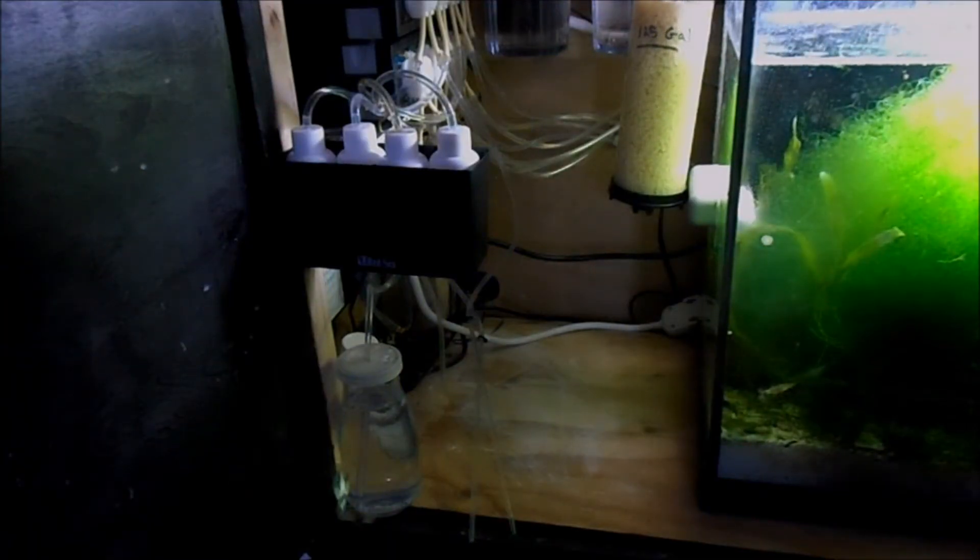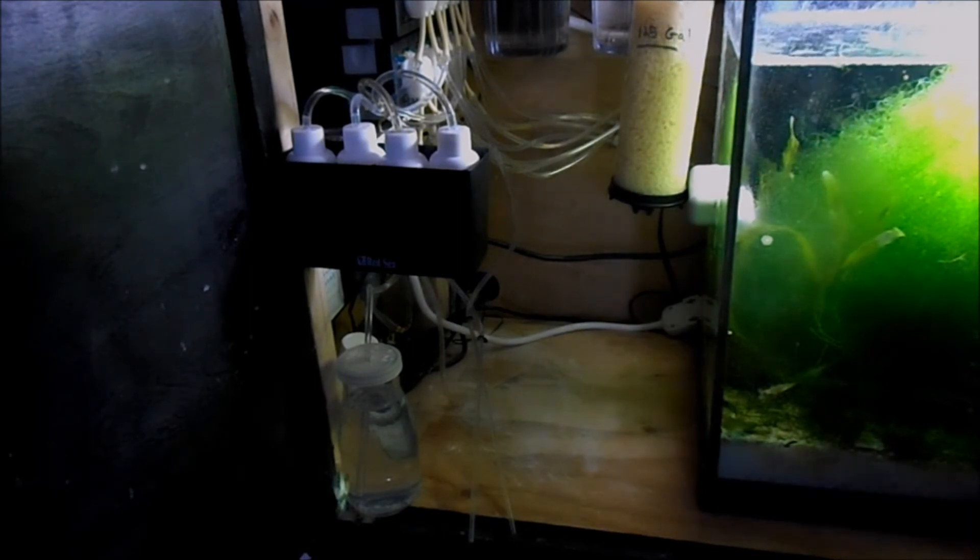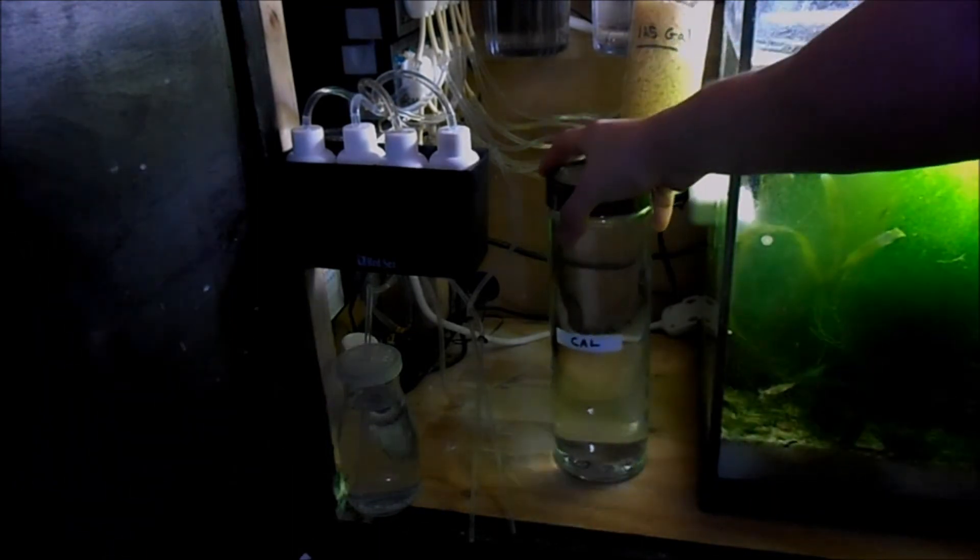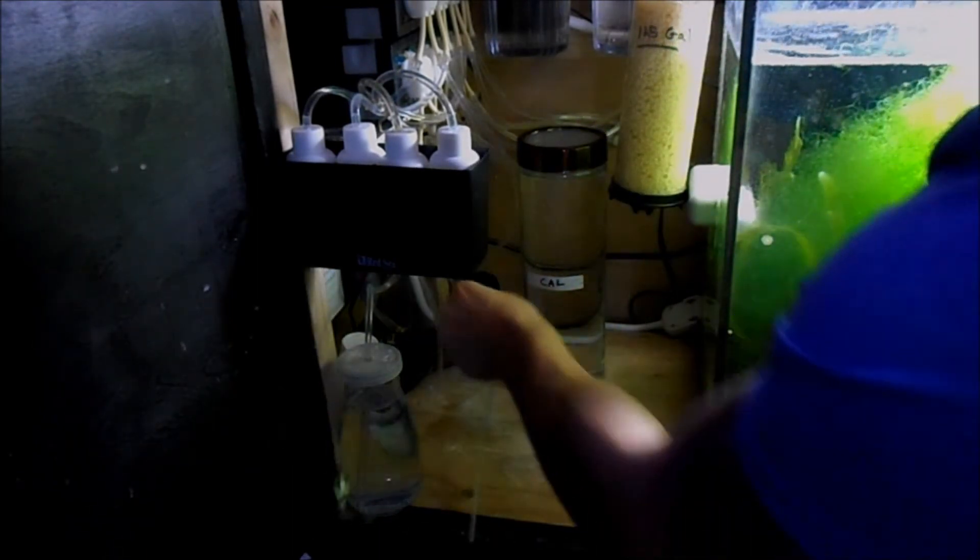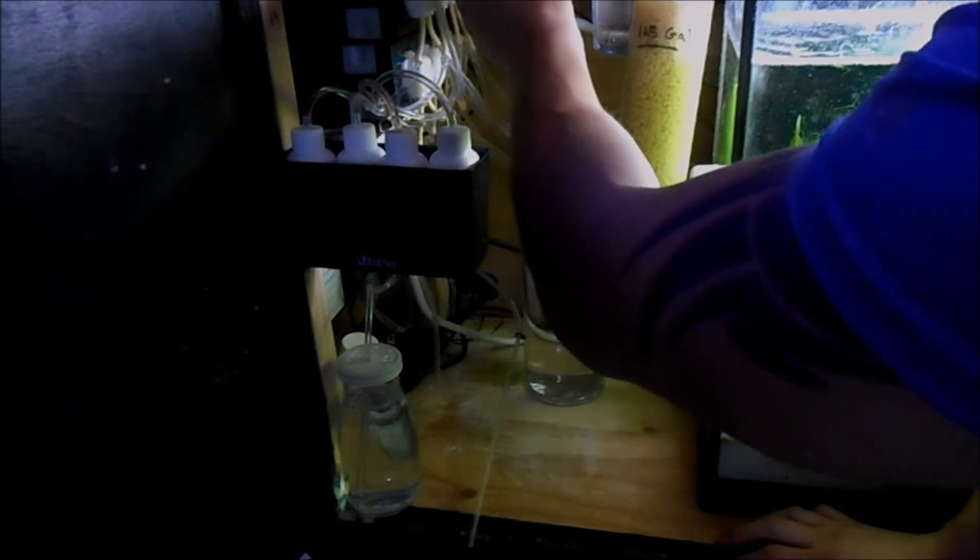All right guys, we're here at the reef tank. Now we're underneath the stand. The dosing pump is now off just to make sure we're not pulling any liquid out of the tube while we're messing with the containers. So let's go ahead and put in our first one, which we have calcium here. And then we just find the calcium container.